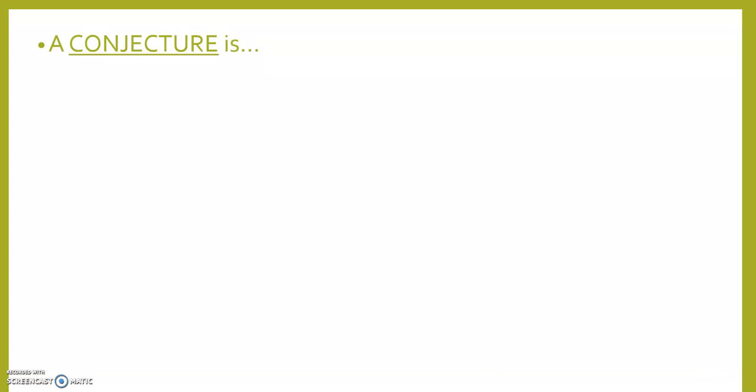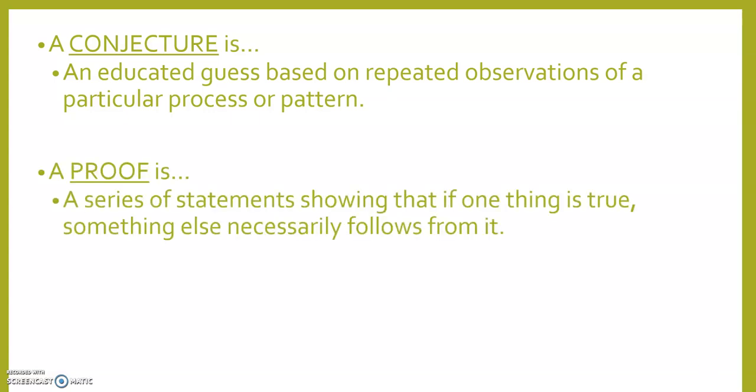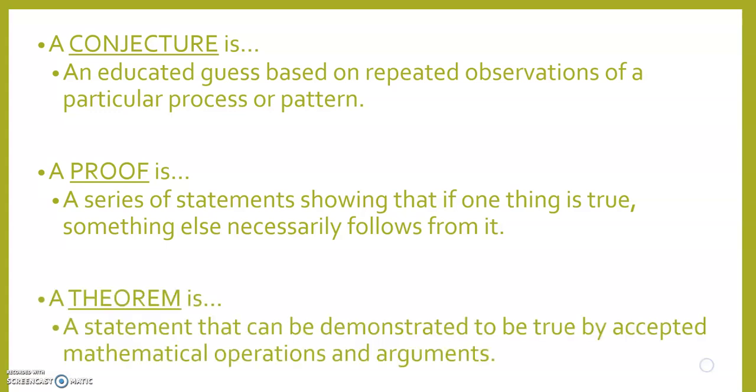A conjecture is an educated guess based on repeated observations of a particular process or pattern. A proof is a series of statements showing that if one thing is true, something else necessarily follows from it. A theorem is a statement that can be demonstrated to be true by accepted mathematical operations and arguments.